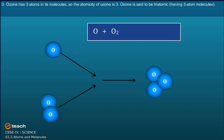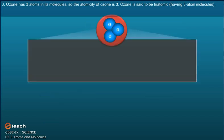Ozone, i.e., O3, has three atoms in its molecules. So the atomicity of ozone is three. Ozone is said to be triatomic, having three atom molecules.